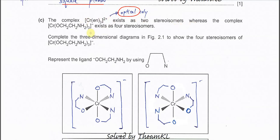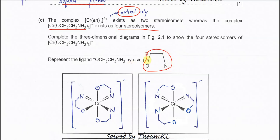The complex with this bidentate ligand — which has one oxygen donor and one nitrogen donor — exists as four stereoisomers. Complete the 3D diagram in the figure showing all four stereoisomers, using this representation for the bidentate ligand.